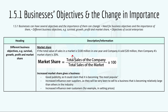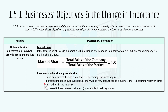Then we have market share. If the total value of the sales in the market is 100 million a year, for example, and company A sold 20 million of those, then company A's market share is 20%. The formula is: market share equals total sales of the company divided by total sales of the market, times 100 to make it a percentage. An increased market share gives a business good publicity, increased influence over suppliers who will be keen to sell to a larger business, and increased influence over customers, for example in setting prices.